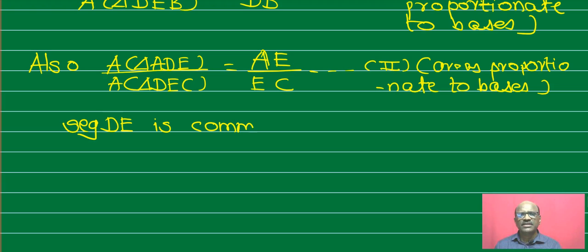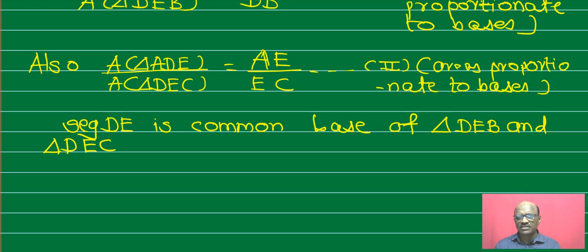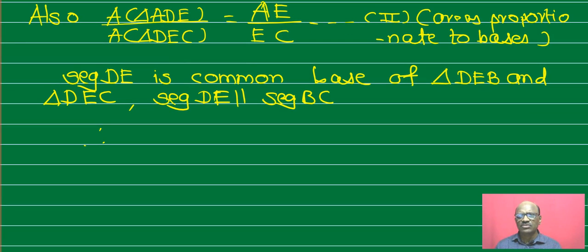The segment DE is the common base. Area of triangle ADE, area of triangle DEB, and area of triangle DEC — DE is the common base of these two triangles. Segment DE is parallel to segment DC. Therefore these two triangles lie between two parallel lines and therefore they have the same height.